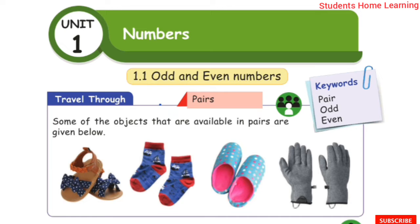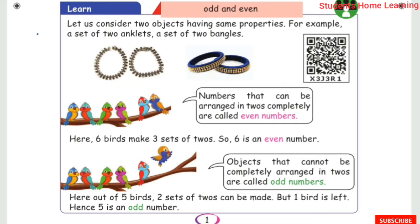Repeated Addition and Repeated Subtraction. Pairs — some of the objects that are available in pairs are given below. Objects that come in pairs include slippers, socks, shoes, and gloves. Let us consider two objects having the same properties — for example, a set of two anklets and a set of two bangles.